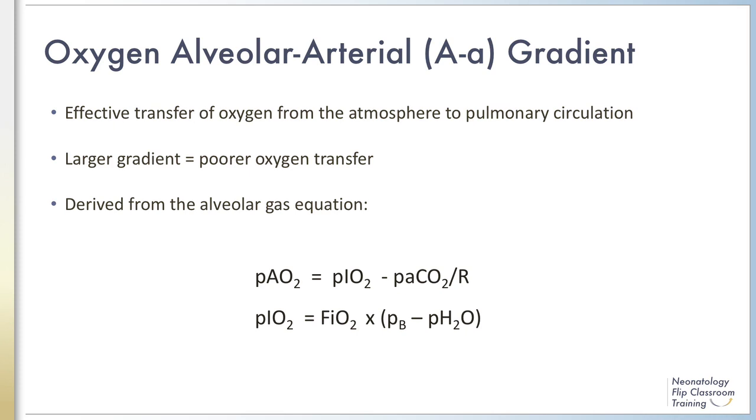When calculating the A-a gradient, you can assume that at sea level, the atmospheric gas pressure is 760 mmHg and that water vapor pressure is 47 mmHg.